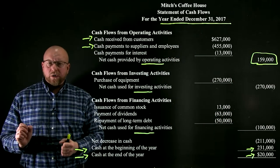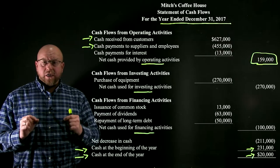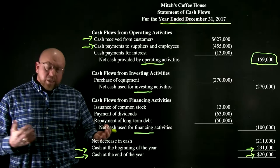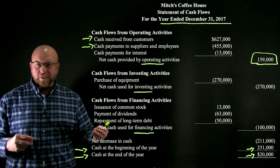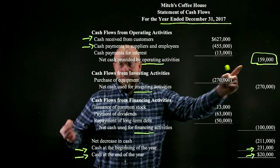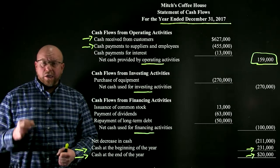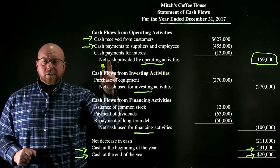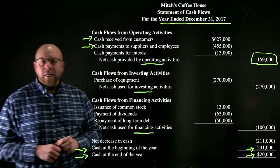One of the things you want to assess about a company's health is whether it generates a positive operating cash flow. It's possible that in a bad year or due to timing differences, operating cash flow could be negative, but that won't work on a sustained basis. In order for a company to be a viable going concern, it needs to generate operating cash flows on a pretty consistent basis.